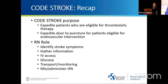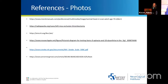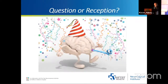To recap: the purpose of code stroke is to expedite patients eligible for thrombolytic therapy and endovascular intervention. The RN role is extremely important — you're at the bedside and see the patient more than anyone. Key responsibilities include identifying stroke symptoms, performing Q1 hour neuro exams, gathering appropriate information when the team arrives, having IV access and transport monitoring ready, and being comfortable with mixing and administering TPA or knowing who on your unit is. Does anybody have questions?